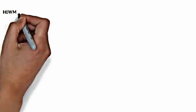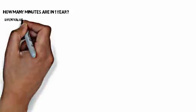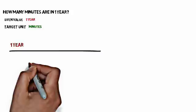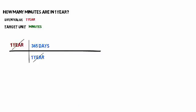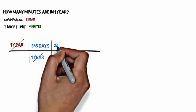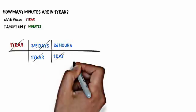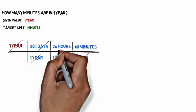Let's try one more problem: how many minutes are in a year? The given value is one year and the target unit is minutes. We draw our table and put one year at the starting point. We know 365 days equals one year, so we put that in and cancel out the years, leaving us in days. There are 24 hours for every one day, so we cancel out days. Then there are 60 minutes for every one hour, so we cancel out hours, leaving us with our target unit of minutes.